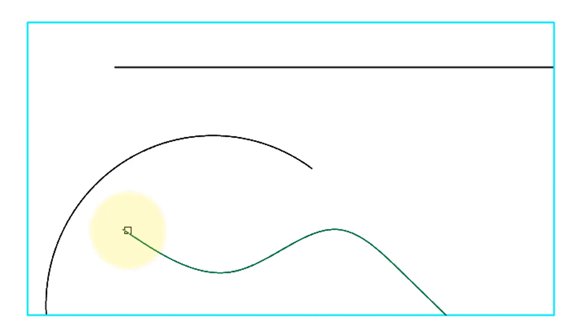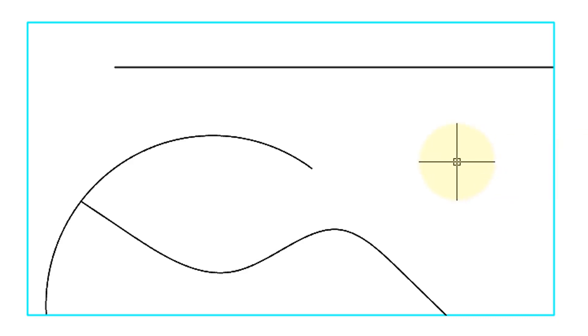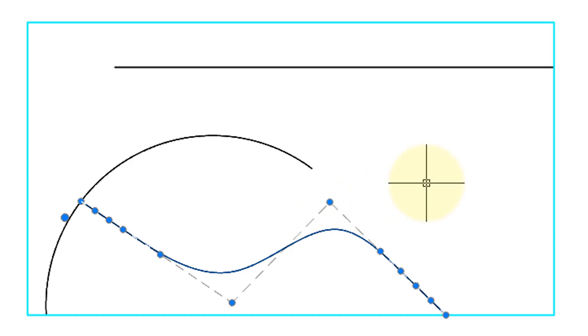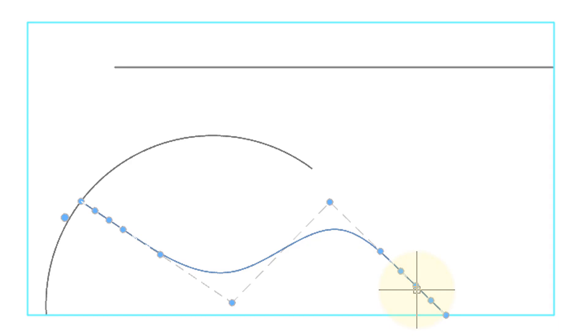When I click at the other end, the same thing happens — the tangent is extended. To see the tangents of splines and get an idea of how they'll be extended, I've cancelled the Extend command and selected the spline, and you can see at both ends the directions of the tangents.